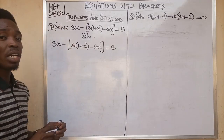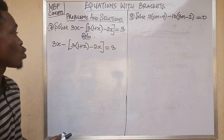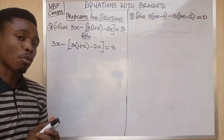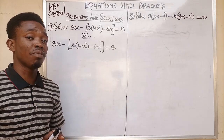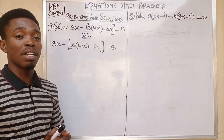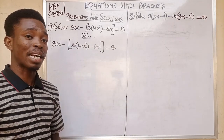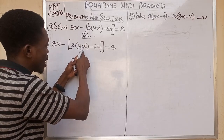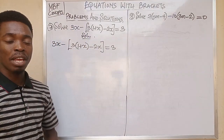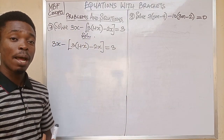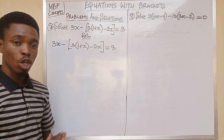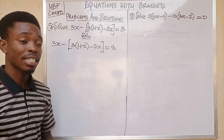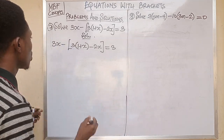The first thing we will do in this case is to remove the brackets. We start removing brackets from the smaller, internal brackets — the ones inside the square bracket. That is where our process is going to start from.